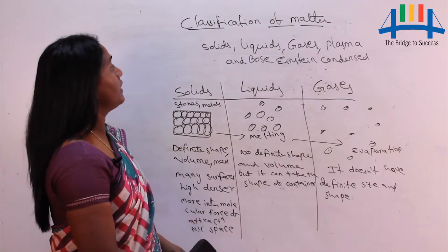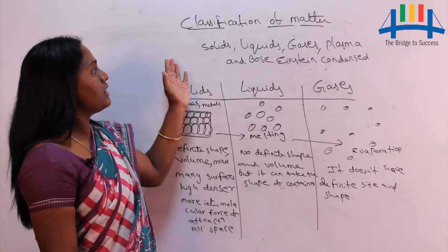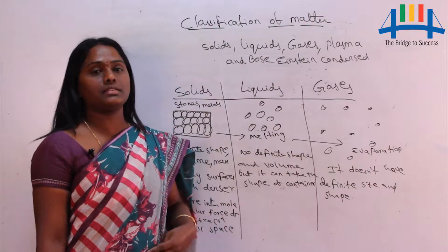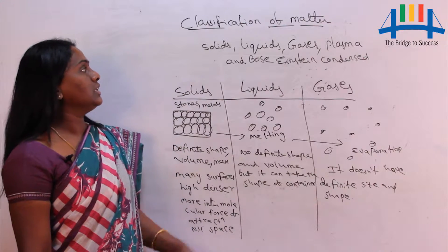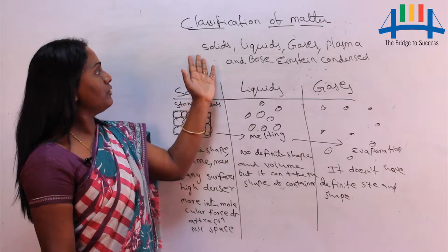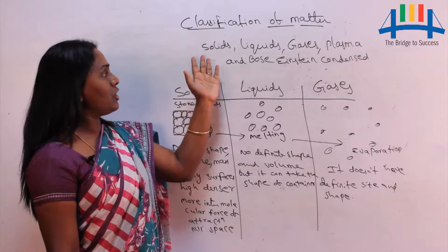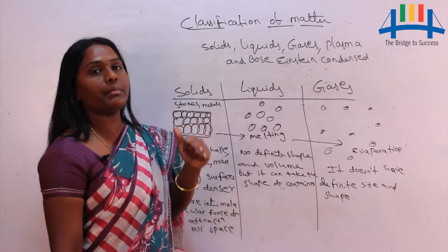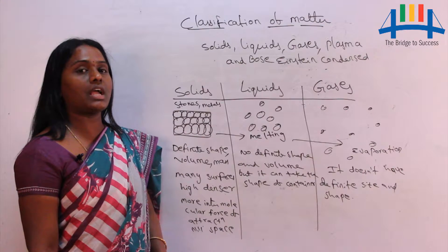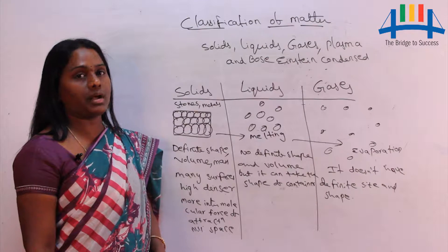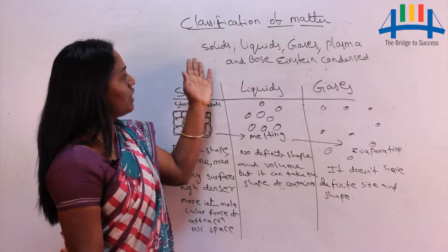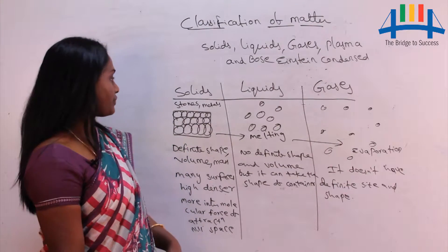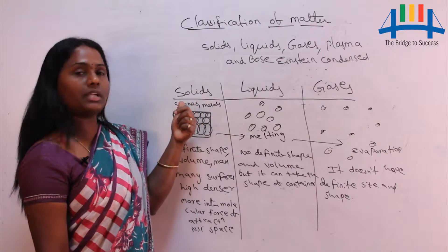Hello everyone, today we will be learning about classification of matter. Matter is classified into five types: solids, liquids, gases, plasma, and Bose-Einstein condensed state. Among these five, three are very important states we observe in our daily life: solid state, liquid state, and gaseous state. Matter means something which can occupy space and has definite mass and weight.